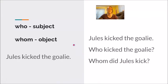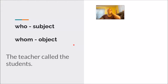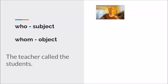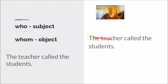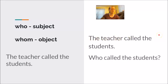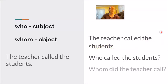Let's look at another sentence: The teacher called the students. Verb: called. Who did the call? The teacher — subject. Who got the call? Students — object. Take away the word teacher; we need to use the subject word who. Who called the students? Take away the word students; we need to use whom. Whom did the teacher call?